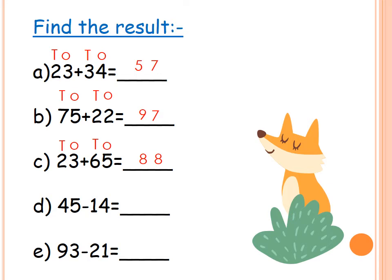The next one is subtraction. We have minus sign. Also, we will write the place value — who is tens and who is ones. Then subtract ones from ones and tens from tens. The first one: 5 minus 4 equals what? Count after 4 to reach 5. After 4: 5. Only 1 finger. So the answer is 1. Then 4 minus 1 equals what? After 1: 2, 3, 4. How many fingers to reach 4? 3. So the answer is 31.